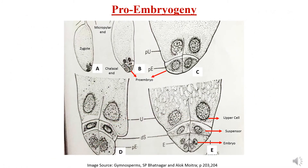Now let us take a look at the events that follow after zygote is formed. Zygote readies itself for the formation of embryo by first making pro-embryo. The nuclei of the zygote undergo free nuclear division, resulting in eight nuclei formed towards the chalazal end. Wall formation takes place and two tiers of cells are formed with four cells in each tier. As you can see in figure C, the upper tier is marked as PU and the lower tier is marked as PE. PE is responsible for embryo formation. This can also be called the pro-embryo stage.